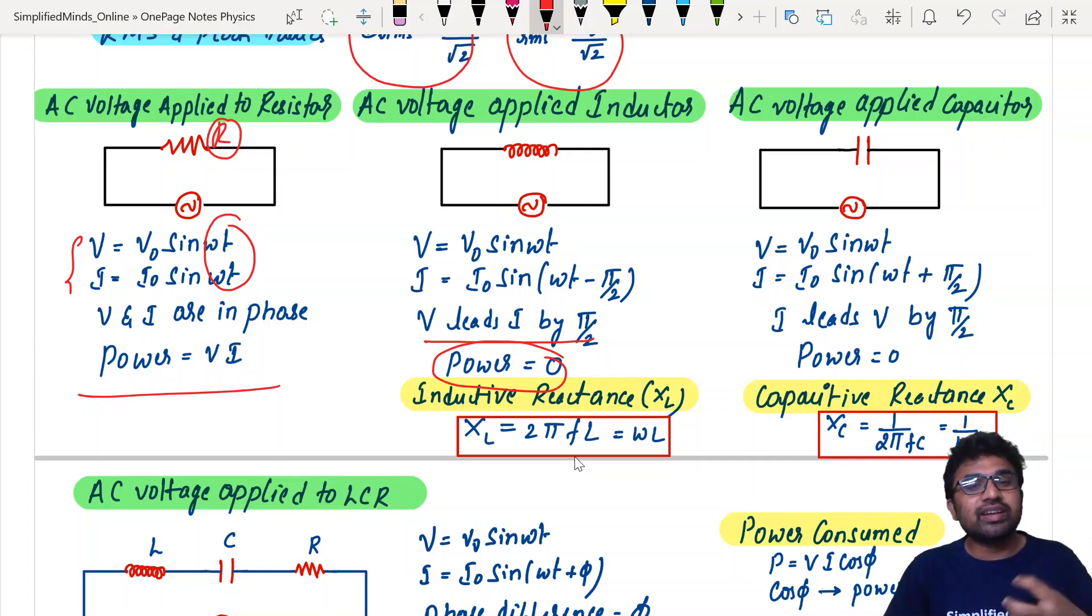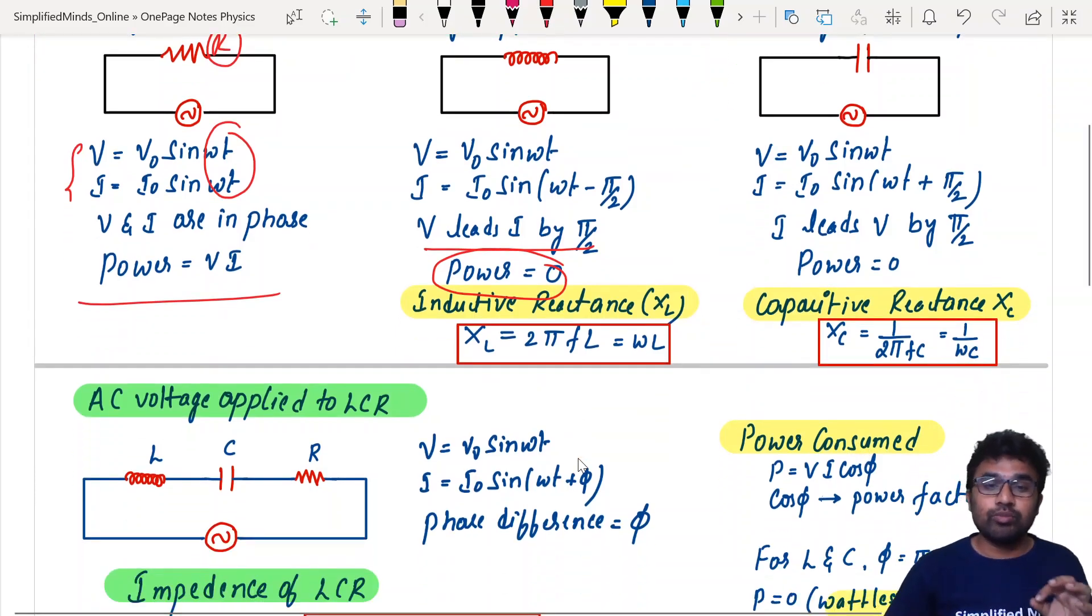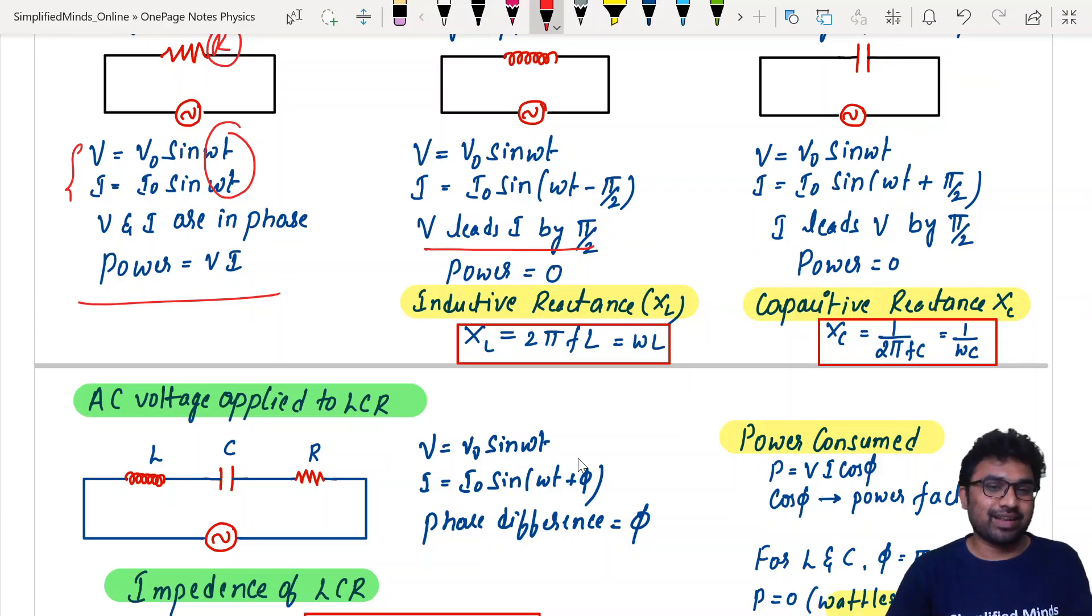Power consumption is zero. Obviously, inductor is a device that stores energy in the form of magnetic field. Resistor dissipates, inductor and capacitor energy is stored in different forms. One magnetic field, one electric field form. The most important formula, inductive reactance is XL. XL is equal to 2 pi F L, that is omega L.